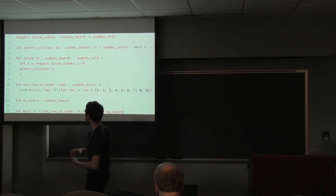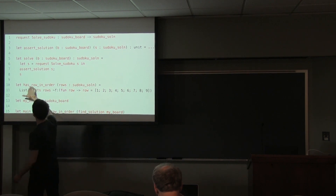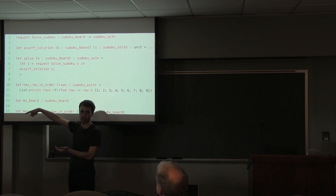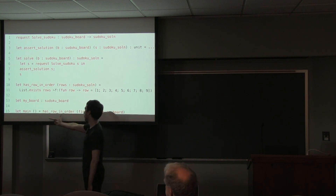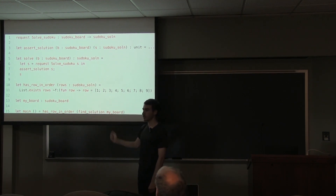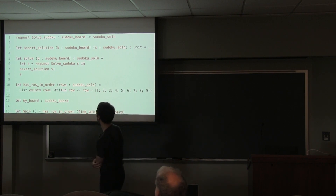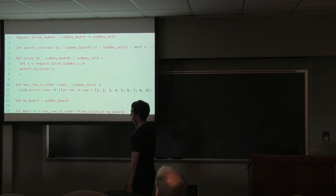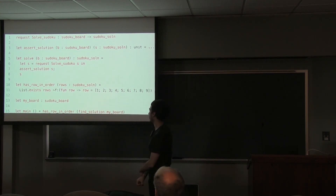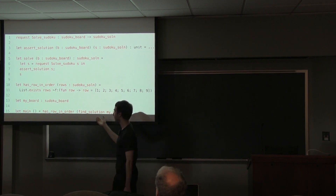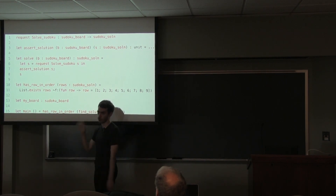This is really quite nice because now things are composable. We can code up 'has_row_in_order' meaning has 1, 2, 3, 4, 5, 6, 7, 8, 9 as a row. And we can say 'has_row_in_order (find_solution my_board)'. The way we say has_row_in_order is we say there exists some row equal to 1, 2, 3, 4, 6, 7, 8, 9. Things are very composable — I have the concept of finding a solution, and then I pass it as an argument to the function that checks if it has a row in order.